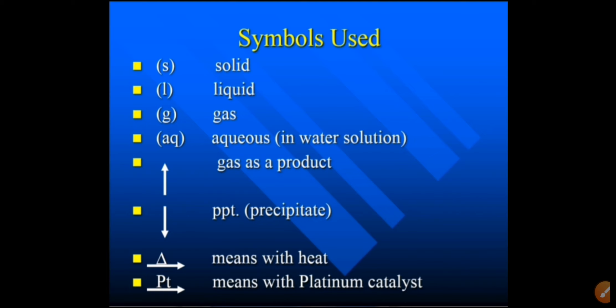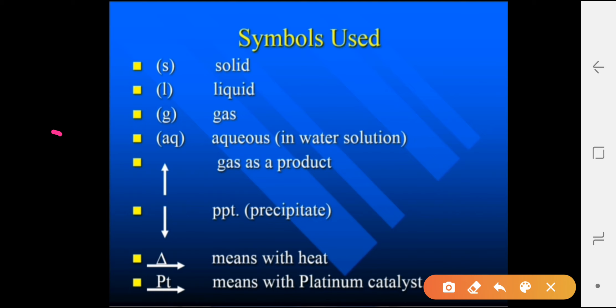In chemical equations, certain symbols are used that you should know. The symbol (s) means solid, (l) means liquid, (g) means gas, and (aq) means aqueous solution, or dissolved in water. An upward arrow indicates gas as a product, a downward arrow indicates a precipitate. A delta symbol indicates heat, and a Pt symbol indicates that platinum catalyst is used.